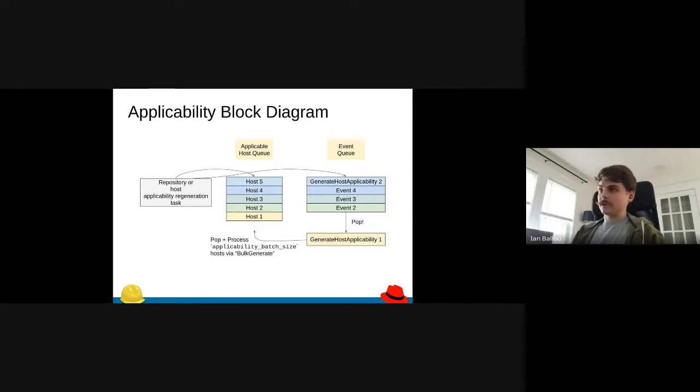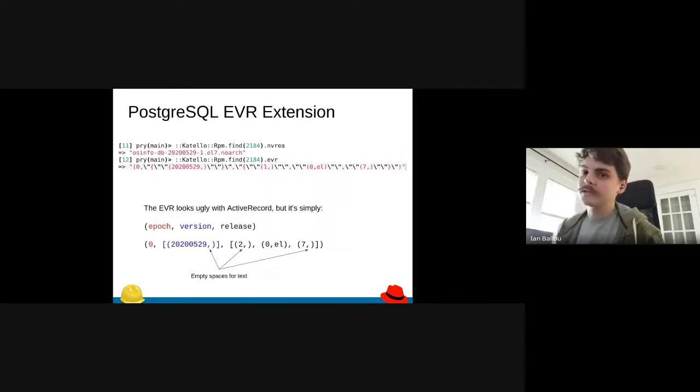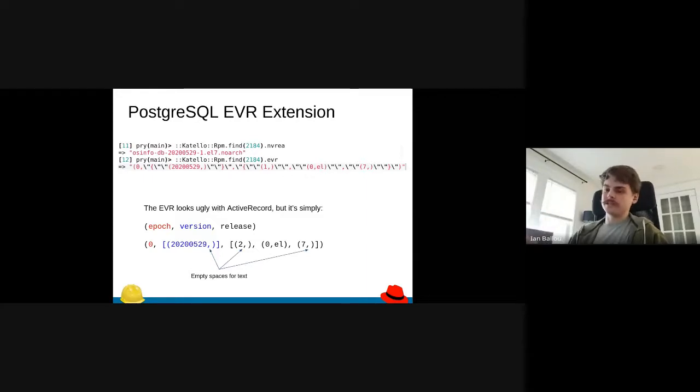That is our block diagram for how the applicability works. Now we can look a bit into how we actually do this calculation. I'm not going to dig too deep into the code, but I think the most interesting thing here is the new Postgres EVR extension. Back when we decided we could take on doing this applicability goodness, we knew that we had all the data, but what we didn't have at the time was a good way to quickly run queries against this data, which is the epoch, version, and release that are part of an RPM.